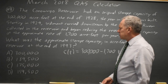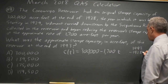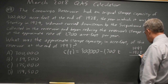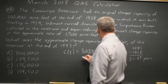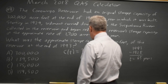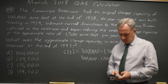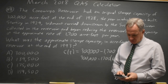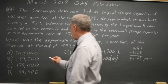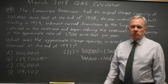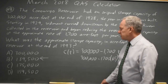1993 would be 65 years later, and the capacity in 1993 would be 300,000 minus 1,700 times 65, which is 189,500 on either your graphing calculator or scientific calculator. Or you can put this formula into Y equals on your graphing calculator and ask for the graph or table at T equals 65 and get the same answer.